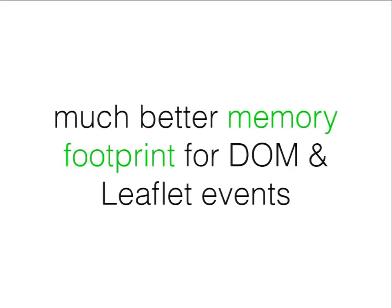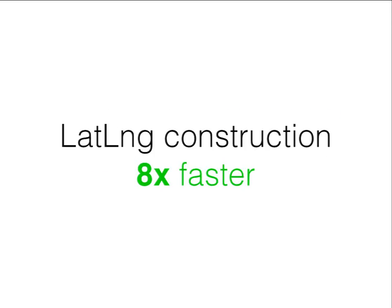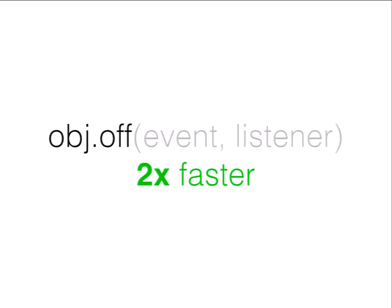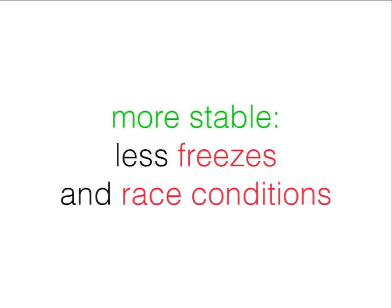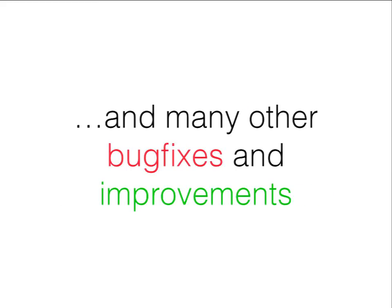There's much better memory footprint for DOM and Leaflet events. LatLng construction is eight times faster — important when you have hundreds of thousands of points to convert. Removing events is two times faster. Generally Leaflet 1.0 is more stable, has fewer freezes on weird mobile devices and fewer race conditions. Some big companies are already using the unreleased 1.0 in production because it fixes glaring issues and works better.